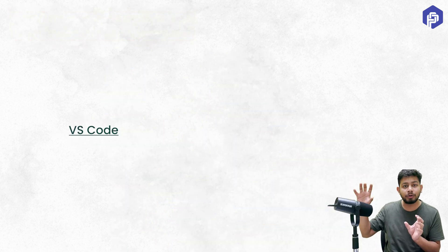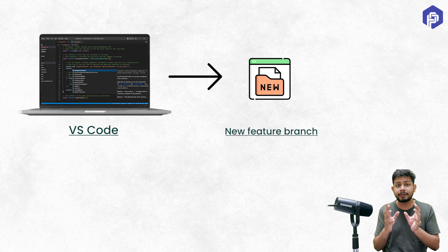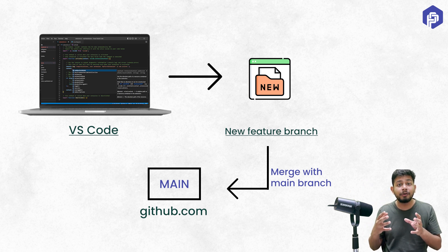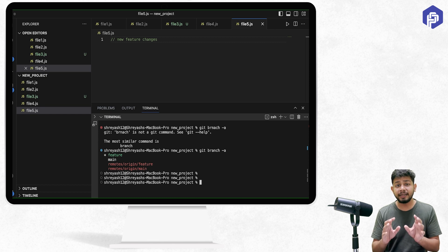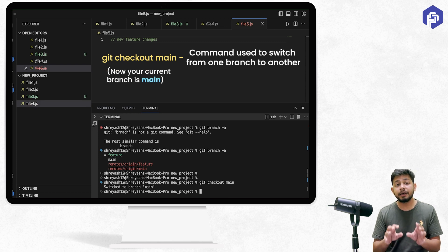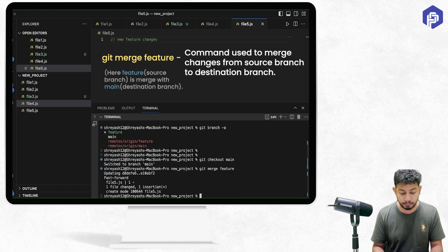Now that the changes made to the feature branch are pushed to the remote repository on a branch named 'feature', to actually bring the changes to users we need to push them to the main branch. On our local system, we first run `git checkout main`, then use `git merge feature` to merge the feature branch into main.